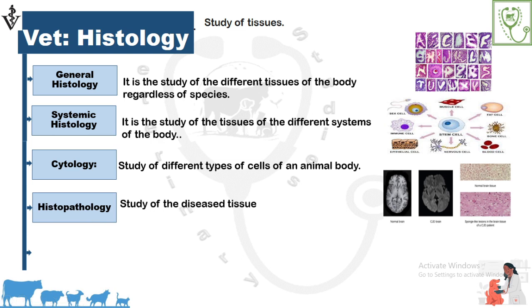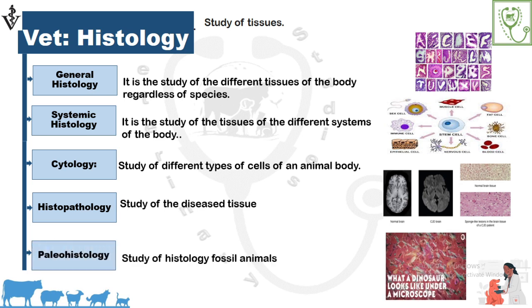Histopathology is the study of diseased tissue. For example, if we have a diseased animal and we take a sample by biopsy procedure, process it in a pathological laboratory, and examine it under the microscope, that is histopathology. Paleohistology is the study of the histology of fossil animals — if a fossil tissue is found, processed in the laboratory, and examined under the microscope, it is called paleohistology.